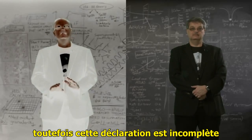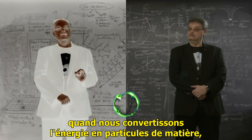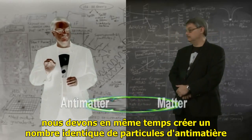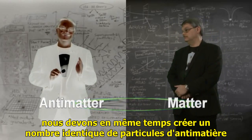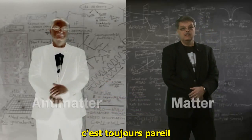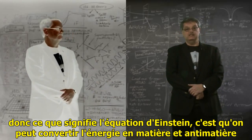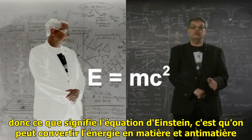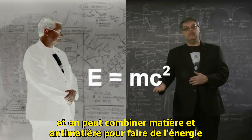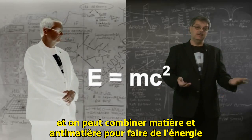However, that statement is incomplete. When we convert energy into a particle of matter, we must at the same time create an identical number of particles of antimatter. It's always the same. So what Einstein's equation means is that you can convert energy to matter and antimatter, and you can combine matter and antimatter to make energy.